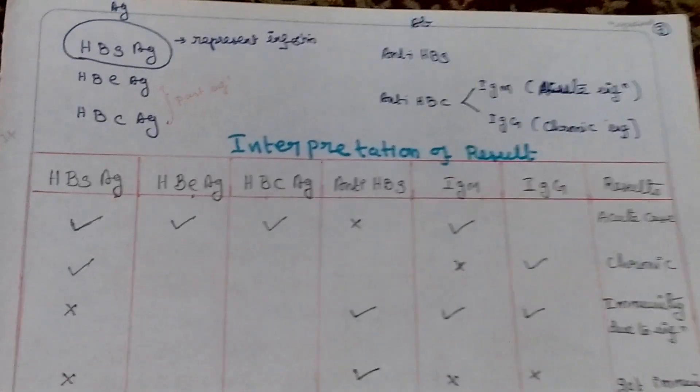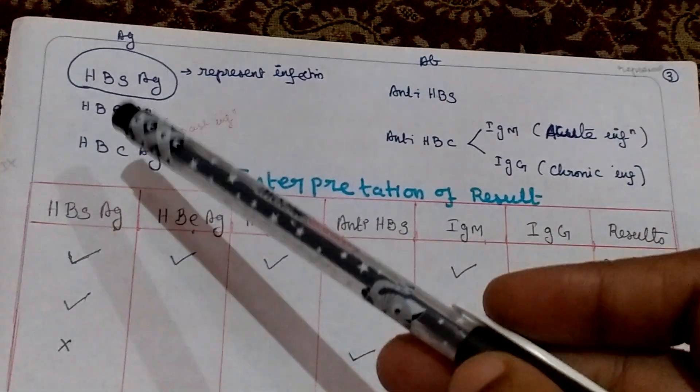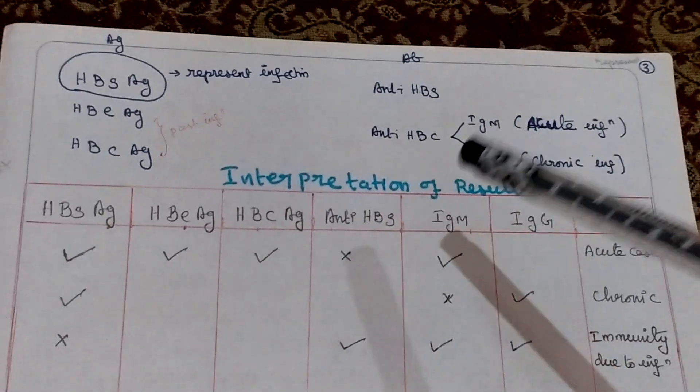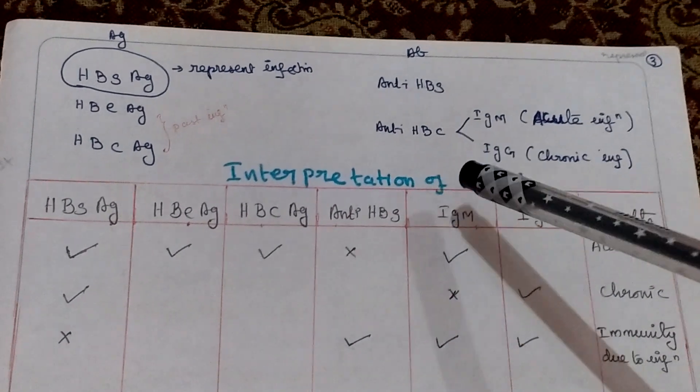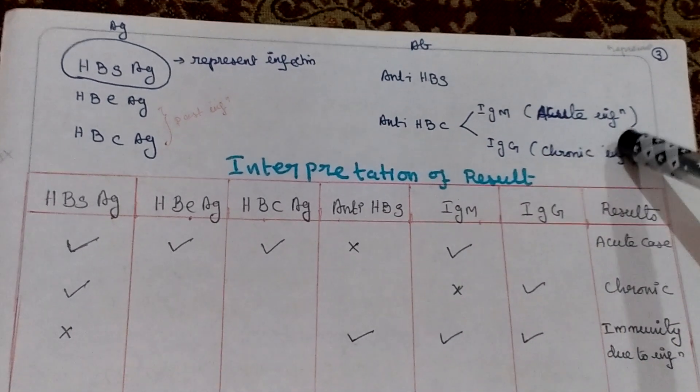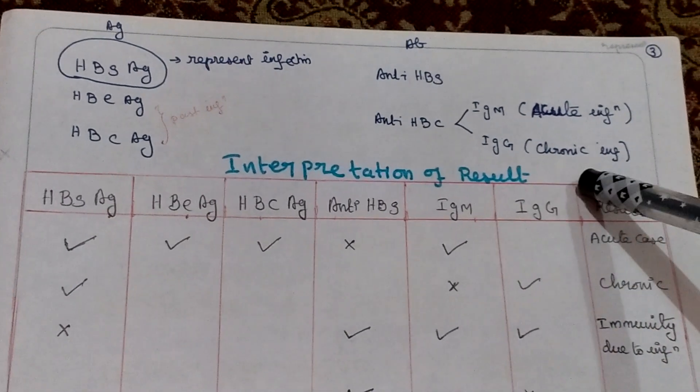For interpretation of results, we have three antigens and three antibodies. HBsAg represents infection. Anti-HBc has two antibodies: IgM indicates acute infection, IgG indicates chronic infection.